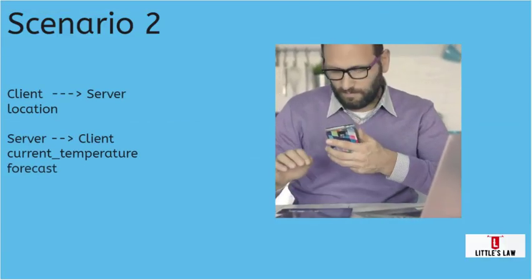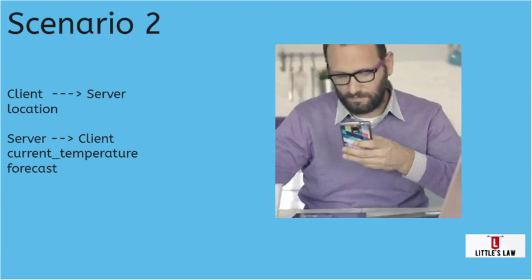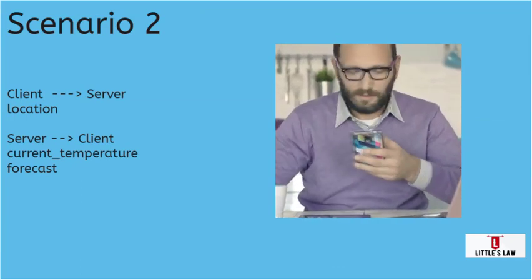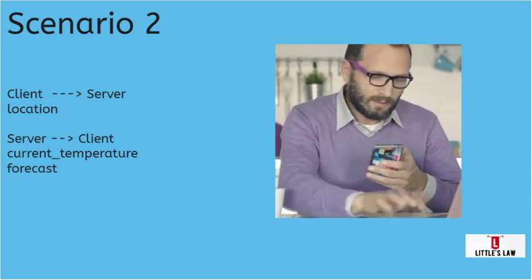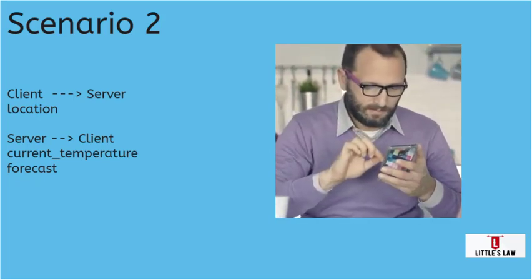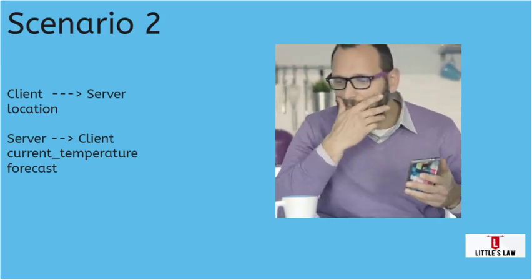In scenario 2, the client has the location of a particular place and wants to know the current temperature and the forecast of the location. This data has to be verbose and again it has to be readable and structured which matches the data. Let's now see how and what we are going to use to deal with this issue.